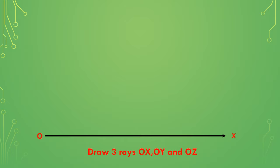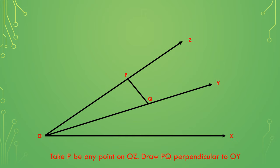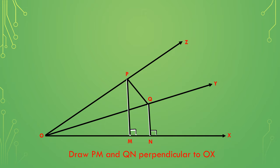First, draw three rays OX, OY, and OZ. Let P be any point on the ray OZ. Draw a line PQ perpendicular to OY. Then draw two lines PM and QN perpendicular to the ray OX. Now draw QR perpendicular to the line PM.